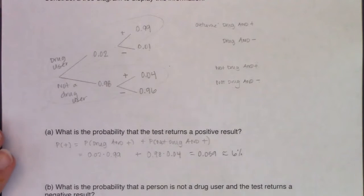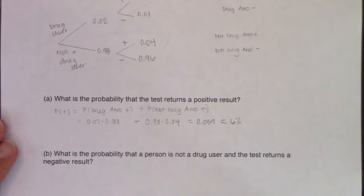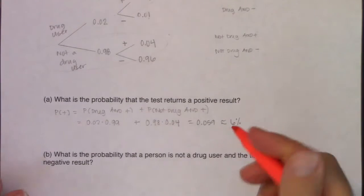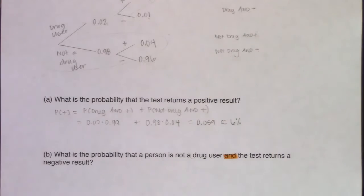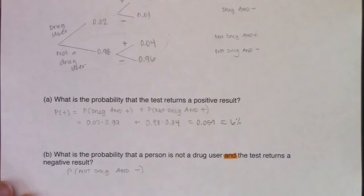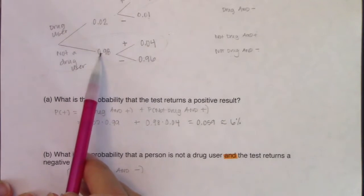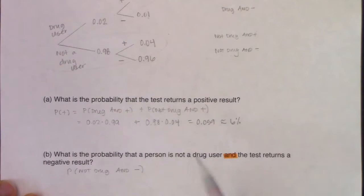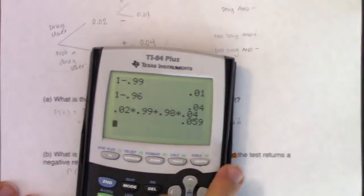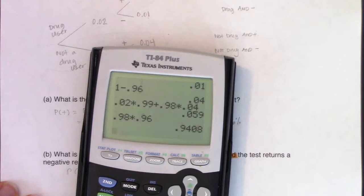Part B says: what is the probability that a person is not a drug user and the test returns a negative result? The buzzword in there is 'and.' So I've got to find the branches that are in play. I want the probability that you are not a drug user and negative. Not a drug user is the bottom branch and testing negative is the other bottom branch, so we're bottom-bottom. This is going to be 0.98 × 0.96, and when I crunch that number it should be pretty high — about 94% of the time.